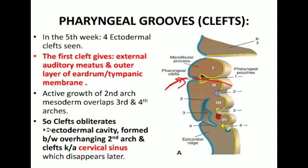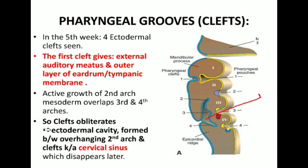The second, third and fourth pharyngeal clefts will disappear. Why? Because of overgrowth of the second pharyngeal arch. The mesoderm of the second pharyngeal arch overgrows over the second, third and fourth clefts, obliterating them, and there is formation of a cavity called the cervical sinus. This is how the cervical sinus is formed and the clefts are disappeared.